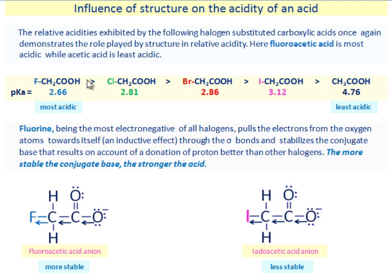Fluoroacetic acid is more acidic than chloroacetic acid which is more acidic than bromoacetic acid which is more acidic than iodoacetic acid which is more acidic than acetic acid.